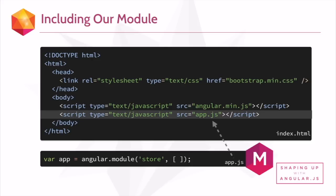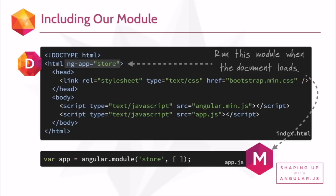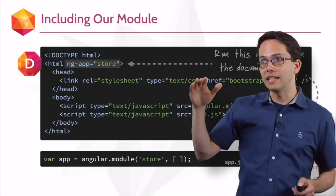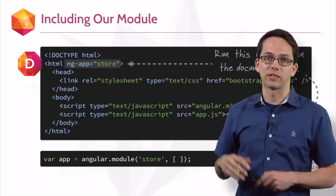Then we'll need to add an attribute to our HTML tag — in this case, ng-app equals store. ng-app, remember, is another directive. This directive creates an Angular application by running this module when the document loads. The module isn't doing anything yet, but just by including it, it's going to treat the HTML inside of this element as part of the Angular app.